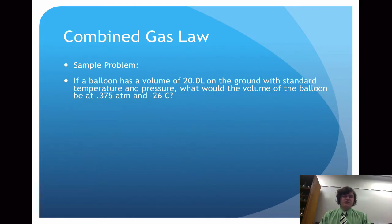Looking at a sample problem, if a balloon has a volume of 20.0 liters on the ground with standard temperature and pressure, what would the volume of the balloon be at 0.375 atmospheres and negative 26 degrees Celsius? So we can see that there are more than two variables changing here.